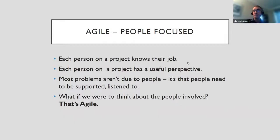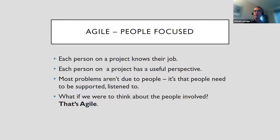Agile is best visualized as a philosophy of projects — how they should be run — and methods you can use to run projects that way. Agile is people-focused. It's about a project where people know their job. We accept that everyone in a project has useful perspectives, that most problems aren't due to people, and that we need to support each other. If you run a project where your first thought is how people get involved, how we focus on what people know — on the end user, on the experts on our team — that's Agile.